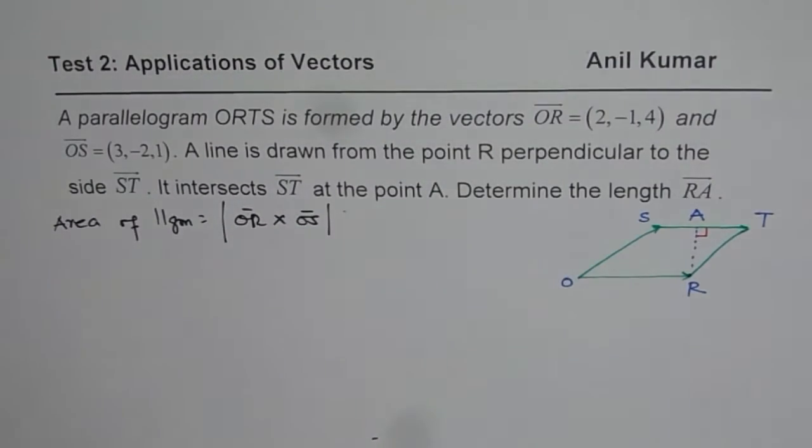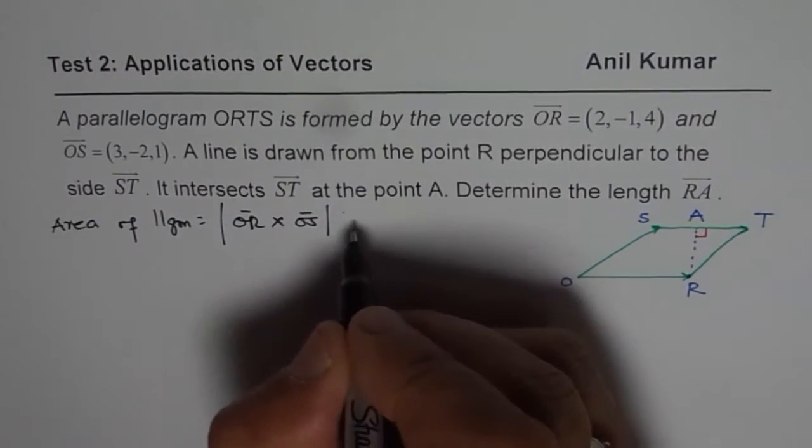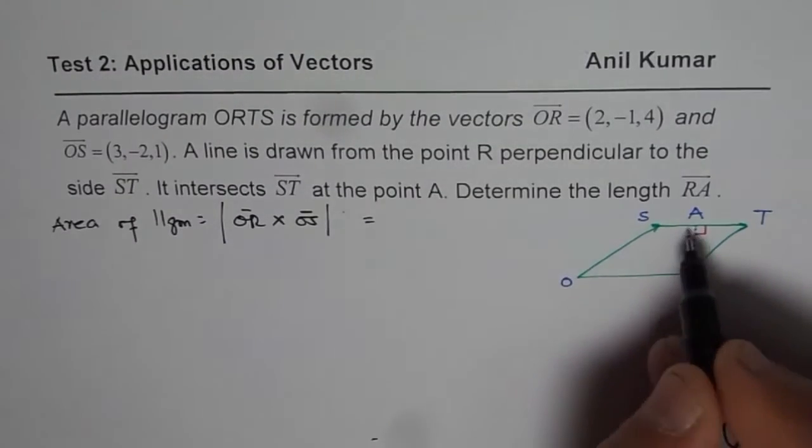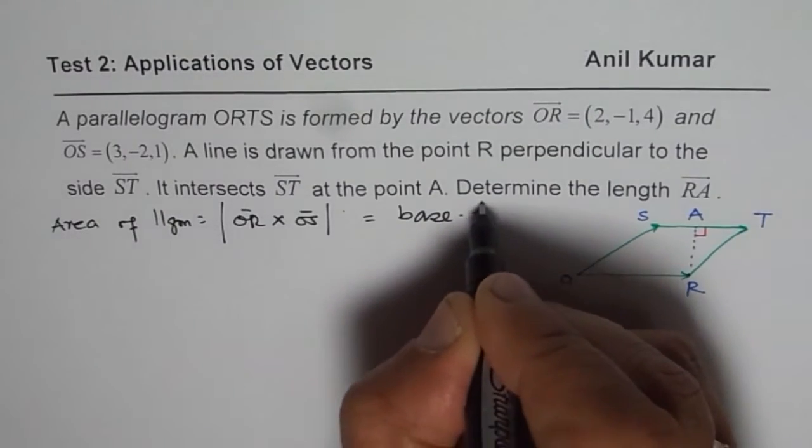Area is a scalar quantity. So it is the magnitude of this that gives us the area. So that is one part. And then area you also know is equal to base into height. So it is also equal to base times height.